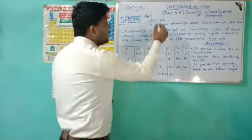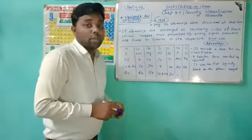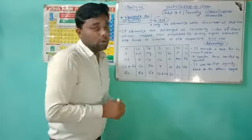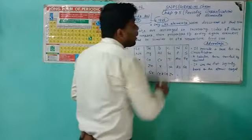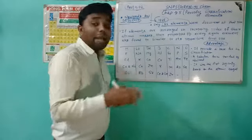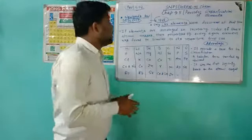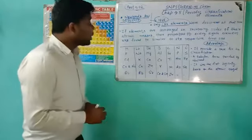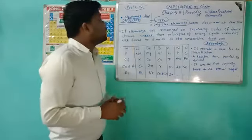This law was given in 1865, though some books also refer to 1864. If there is any problem, you should refer to your NCERT book. At that time, only 56 elements had been discovered, and Newlands said there would be no further discovery of other elements — he believed only 56 elements exist in nature.